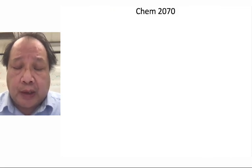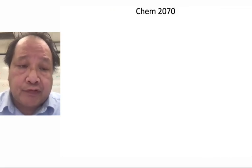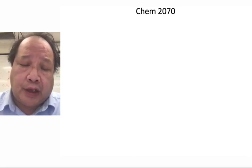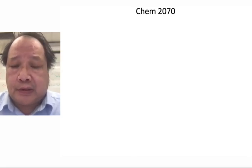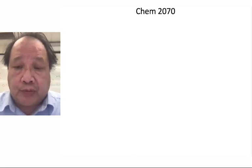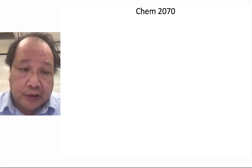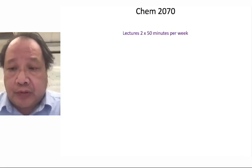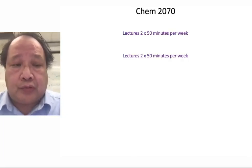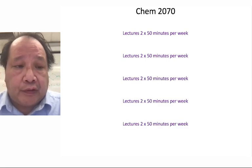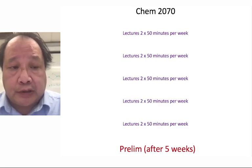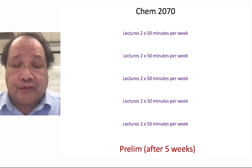In this video I'd like to tell you about the rough structure of the class. When I think about a big university science course — and Chem 2070 is certainly one of them — I think about the lectures, and there are two lectures a week. After around five weeks you'll get an exam to assess how well things are progressing for you.